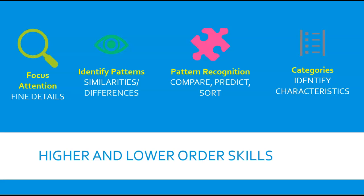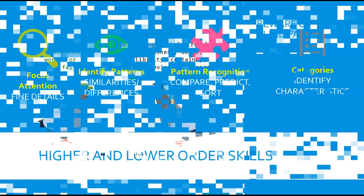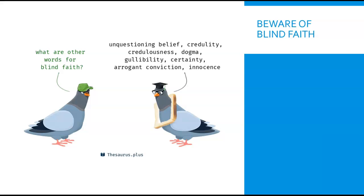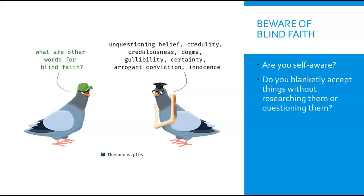When you analyze something for content and detail, you use these skills. When you specifically are trying to identify characteristics, you become more proficient in finding them when doing that analysis again in the future. Why do we talk about this in critical thinking? You want to become more self-aware of how you identify relevant information and avoid being on autopilot, blindly accepting what you read and hear.